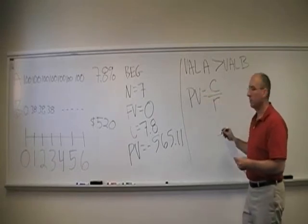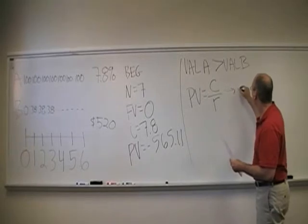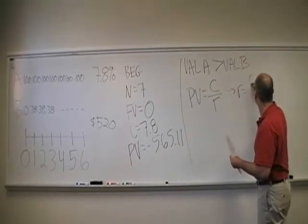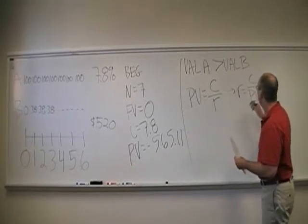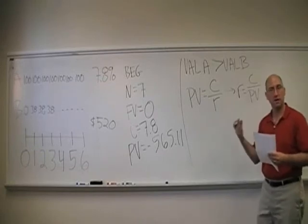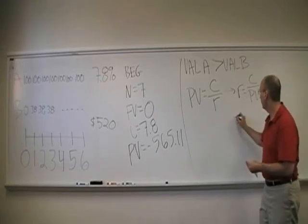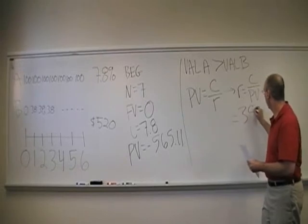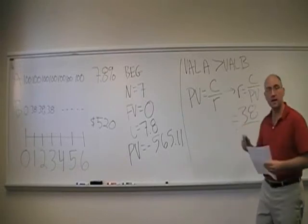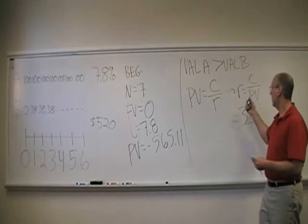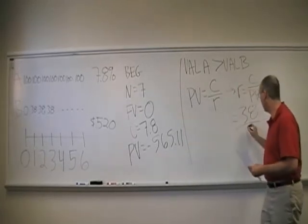Multiply both sides by R, divide both sides by present value. You get that the return, expected return on this, is equal to whatever that regular cash flow is, which in this case is $38, divided by the value, which is given as 520.